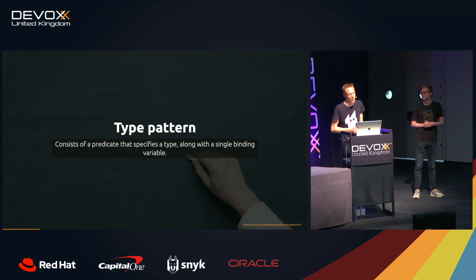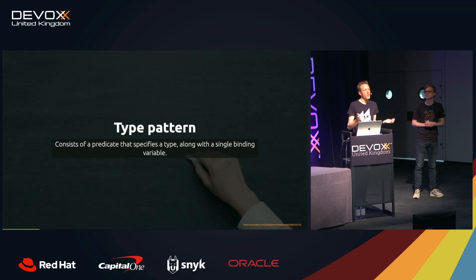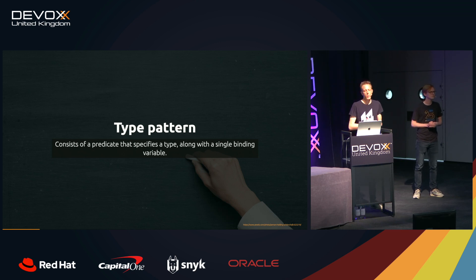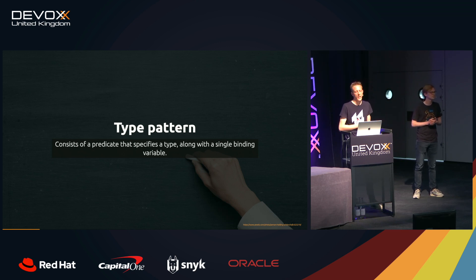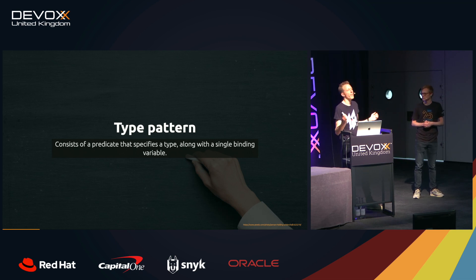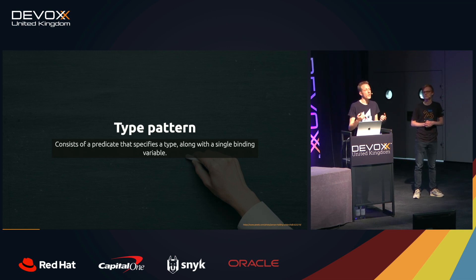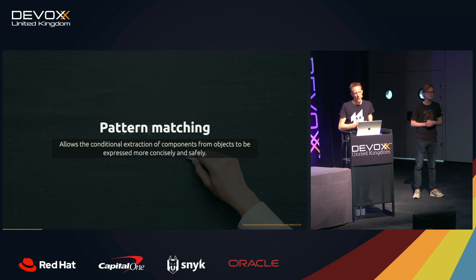With pattern matching for instanceof: if product instanceof guitar lespoul — 'guitar lespoul' is the type pattern. It does three things at once: testing, conditional extraction, and binding to the variable 'lespoul'. If this expression resolves to true, we can use 'lespoul'. We've eliminated the drawbacks, and our attention immediately goes to the actual logic. A type pattern consists of a predicate specifying a type along with a single binding variable. It looks like a variable declaration, and that was intentional.